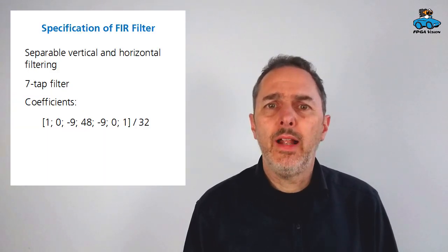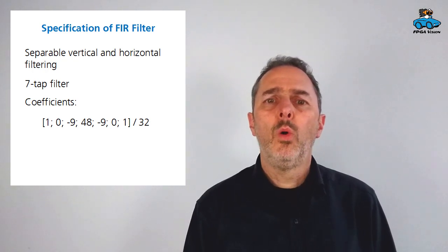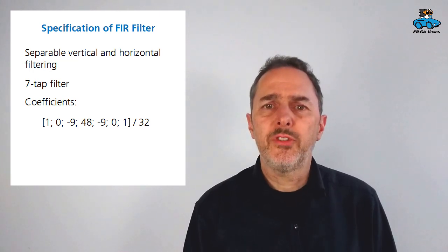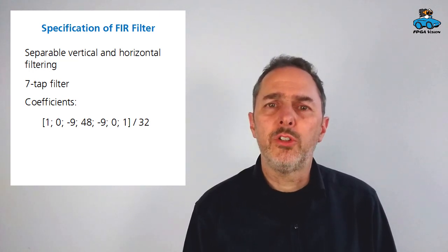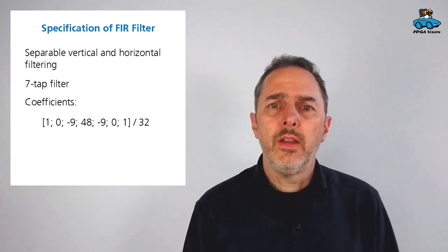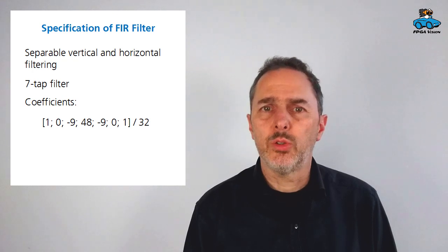Hello and welcome to our lecture about an FIR filter on an FPGA. In the first video we had a look at the algorithm development and we saw that we want to have a separable filter for horizontal and vertical processing, that we want to have seven taps and we also determined the filter coefficients. In this video we will have a look at the circuit structure and the VHDL code.